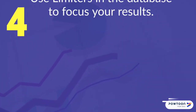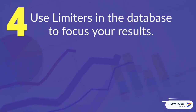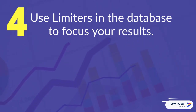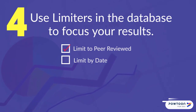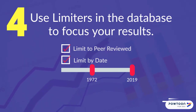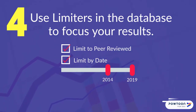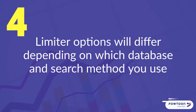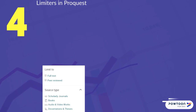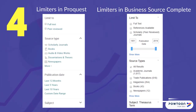Tip 4: Use limiters in the database to focus your results. You can limit to peer-reviewed items, limit by date — for example, 2014 to 2019 — and limit by document type. Limiter options will differ depending on which database and search method you are using. Here are examples of what limiters look like in both ProQuest and Business Source Complete.